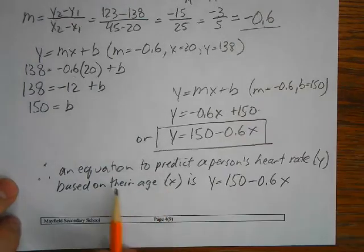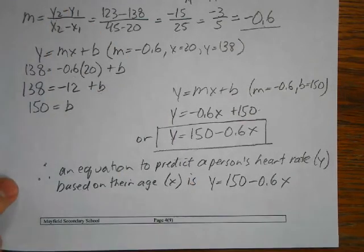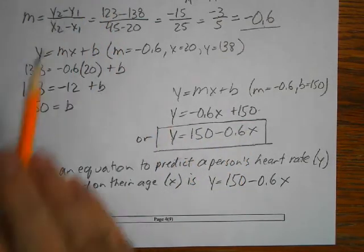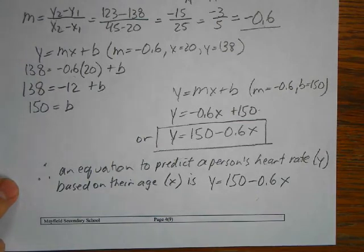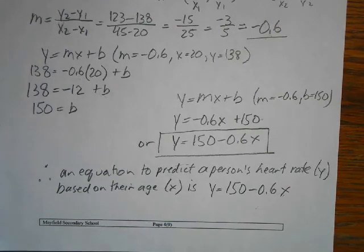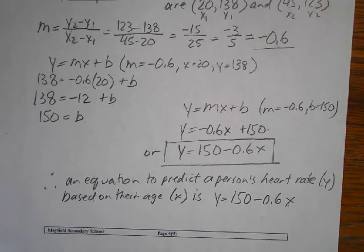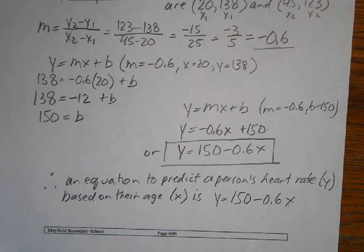You could use this to predict a person's heart rate for any age — just plug in their age and you get their heart rate. So that's it for today. There's some homework attached to the lesson where you can practice this yourself. There'll be two more lessons in this unit. The next lesson we're going to be looking at some properties of slopes, and then the final lesson we'll be looking at graphing linear equations. Hope this lesson helped, and we'll see you on the next lesson.